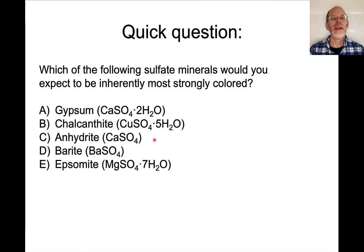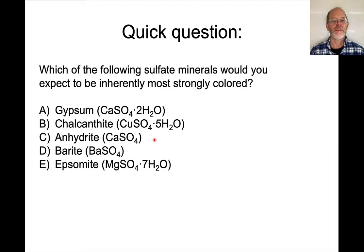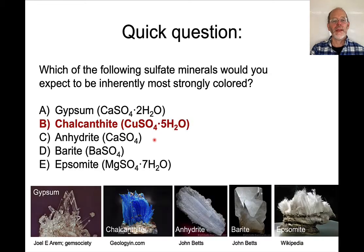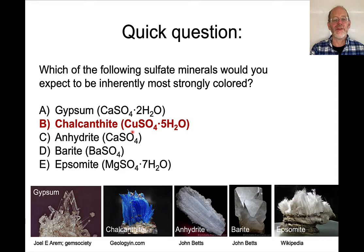If you had to predict which of the following sulfate minerals would be most strongly colored, which would you predict? The answer is chalcanthite. Here are pictures of all of these minerals — you can see it's a beautiful blue color, caused by the copper transition metal in its chemical formula.